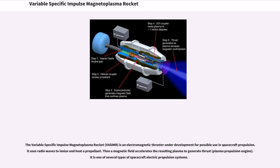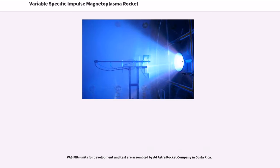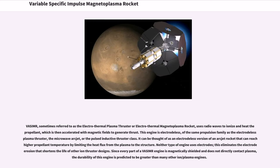It is one of several types of spacecraft electric propulsion systems. The VASIMR method for heating plasma was originally developed from nuclear fusion research. It is intended to bridge the gap between high-thrust, low-specific impulse and low-thrust, high-specific impulse systems, and is capable of functioning in either mode. Former NASA astronaut Franklin Chang Dias created the VASIMR concept and has been developing it since 1977.